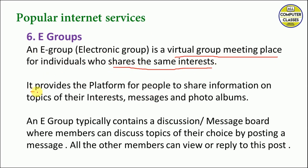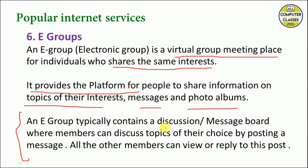E-groups provide a platform for people to share information on the topic of their interest, including messages and photo albums. An e-group typically contains a discussion message board where members can discuss topics of their choice by posting a message. For example, in a group interested in recipes, someone can post a question and others who are well-versed on that topic will post the answer and have a discussion. All other members can view and reply to the post.